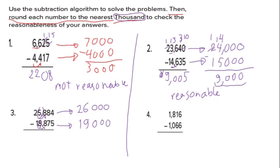Now do the subtraction with three zeros. Can I do 6 minus 9? No, because 6 is smaller than 9. Borrow: here becomes 1 and here becomes 16. 16 minus 9: after 9 — 10, 11, 12, 13, 14, 15, 16 — that's 7. One minus 1 equals zero, cancel it.